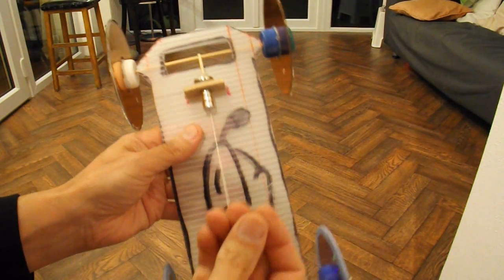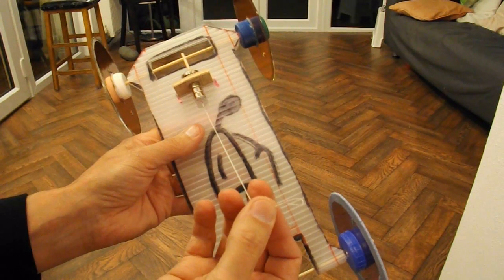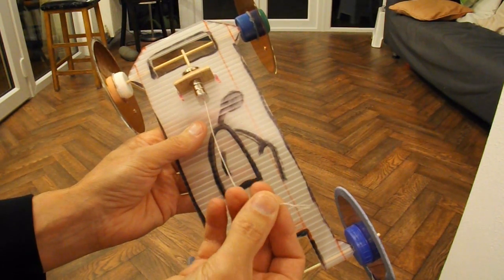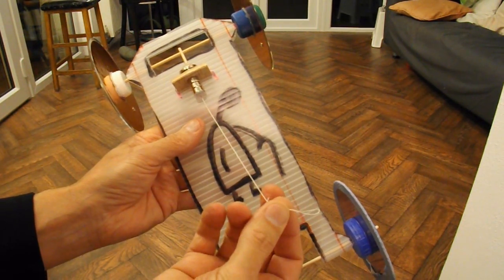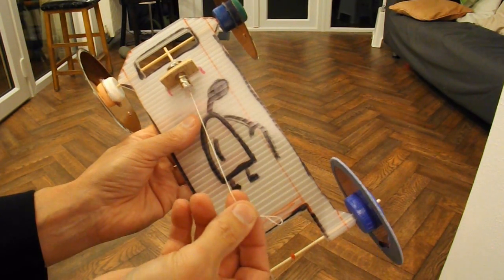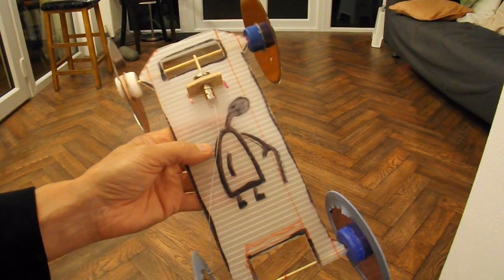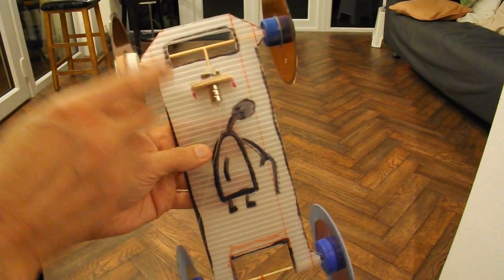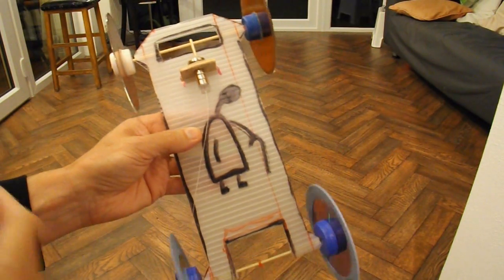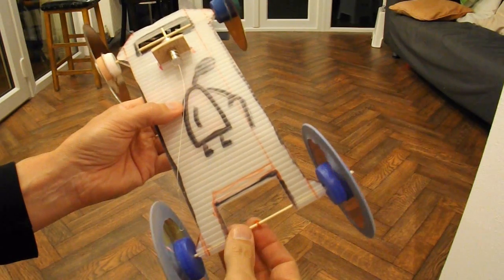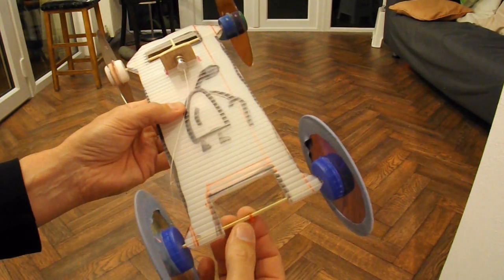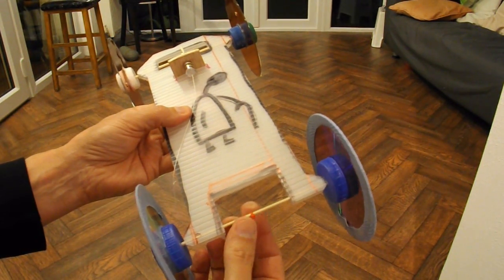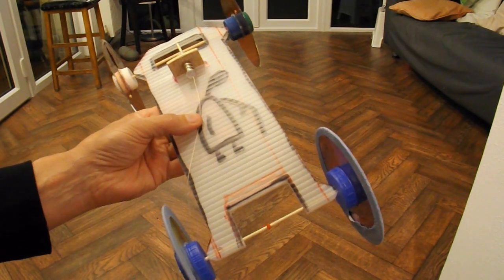So all I've done is I've attached a piece of string, or this is actually kite nylon cotton or whatever. This is a car I've used before, so there's no change to it, it's just an ordinary rubber band-powered car. Still got a little cable tie on it to hook the rubber band onto.